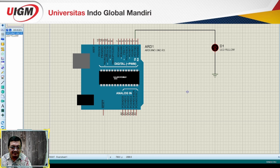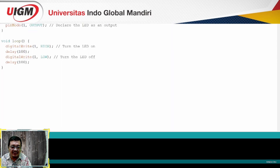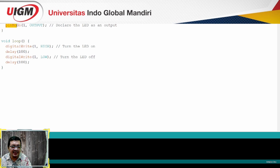Langkah berikutnya adalah kita akan membuat programnya. Programnya di sini saya akan buat menggunakan Arduino IDE. Pertama di bagian setup, saya harus set dulu pin yang akan saya gunakan itu sebagai input atau output. Karena di sini akan dihubungkan dengan LED, otomatis dia sebagai output. Jadi saya set pin 1 sebagai output.